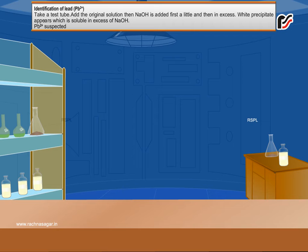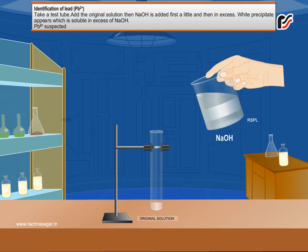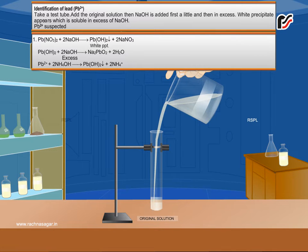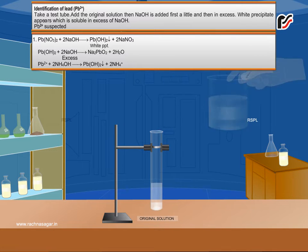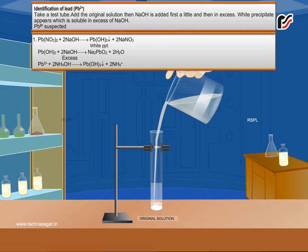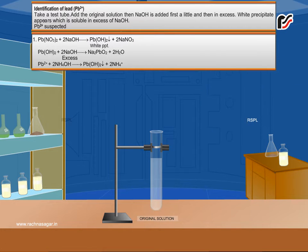Identification of Lead Ion. Take a test tube and add the original solution. NaOH is added first a little and then in excess. A white precipitate appears which is soluble in excess of NaOH. This indicates the presence of Pb²⁺ (Lead Ion).